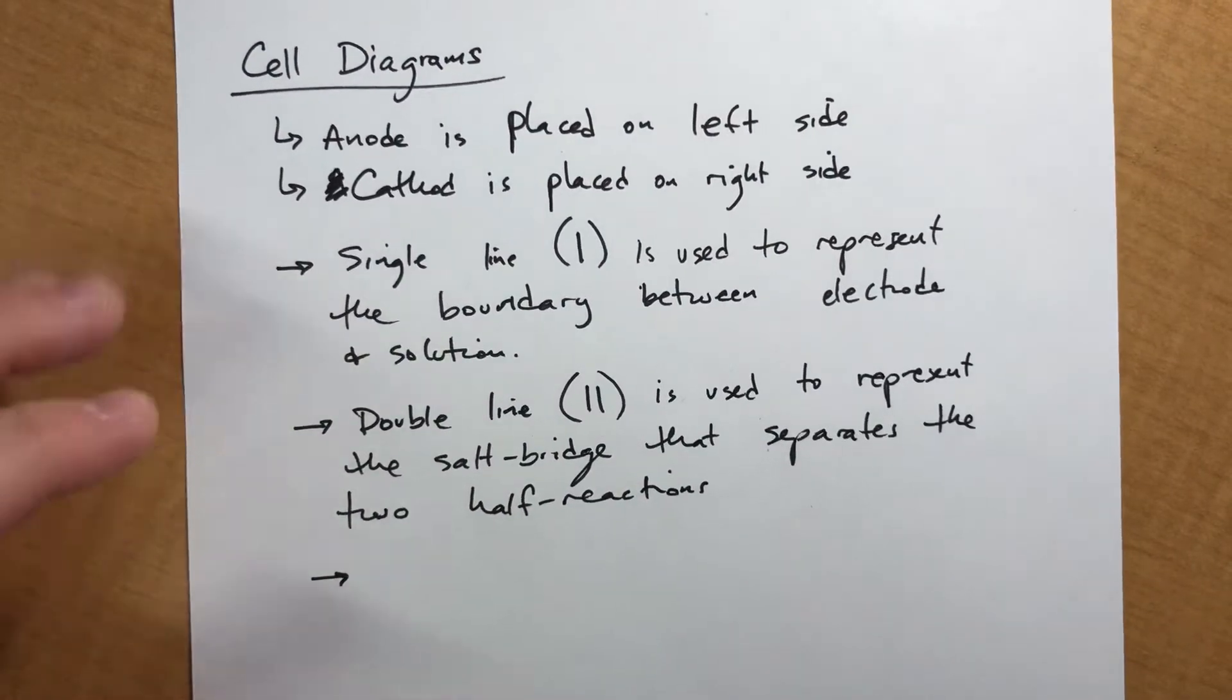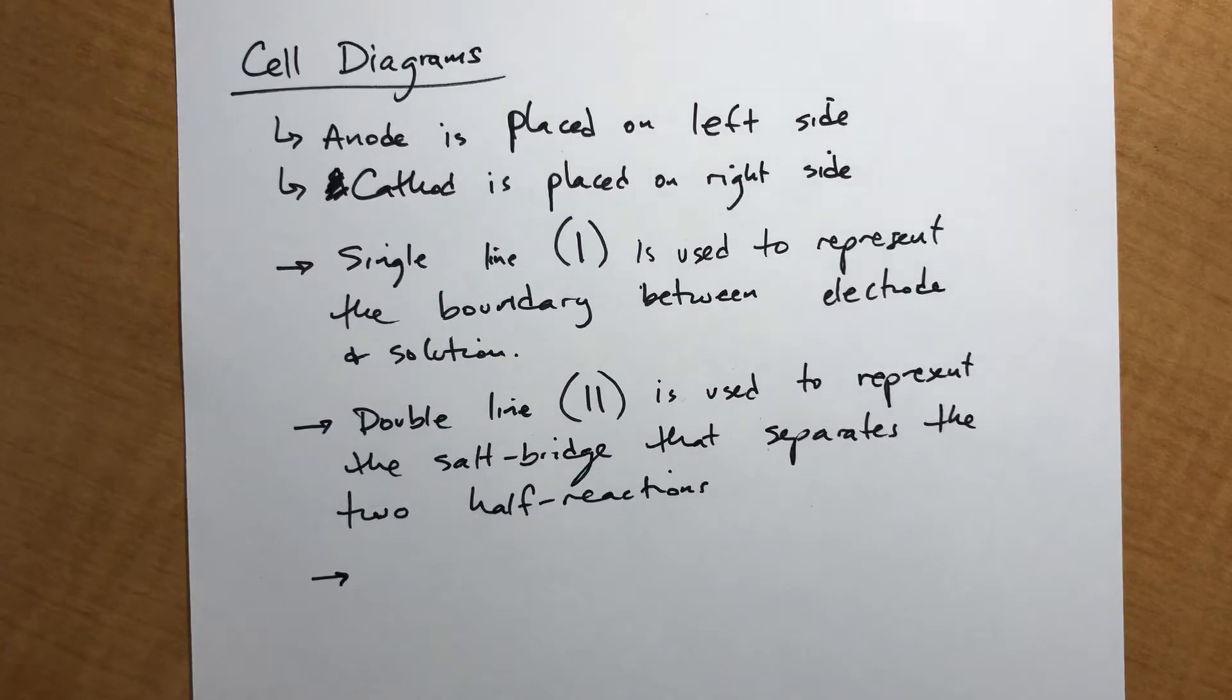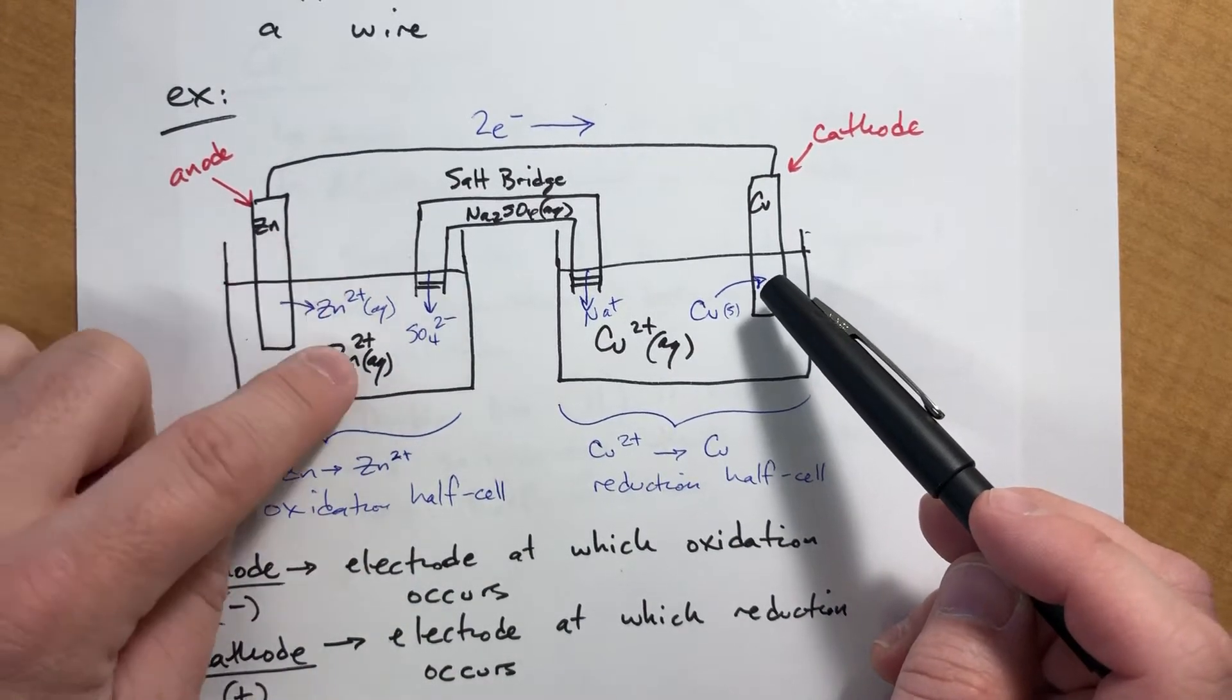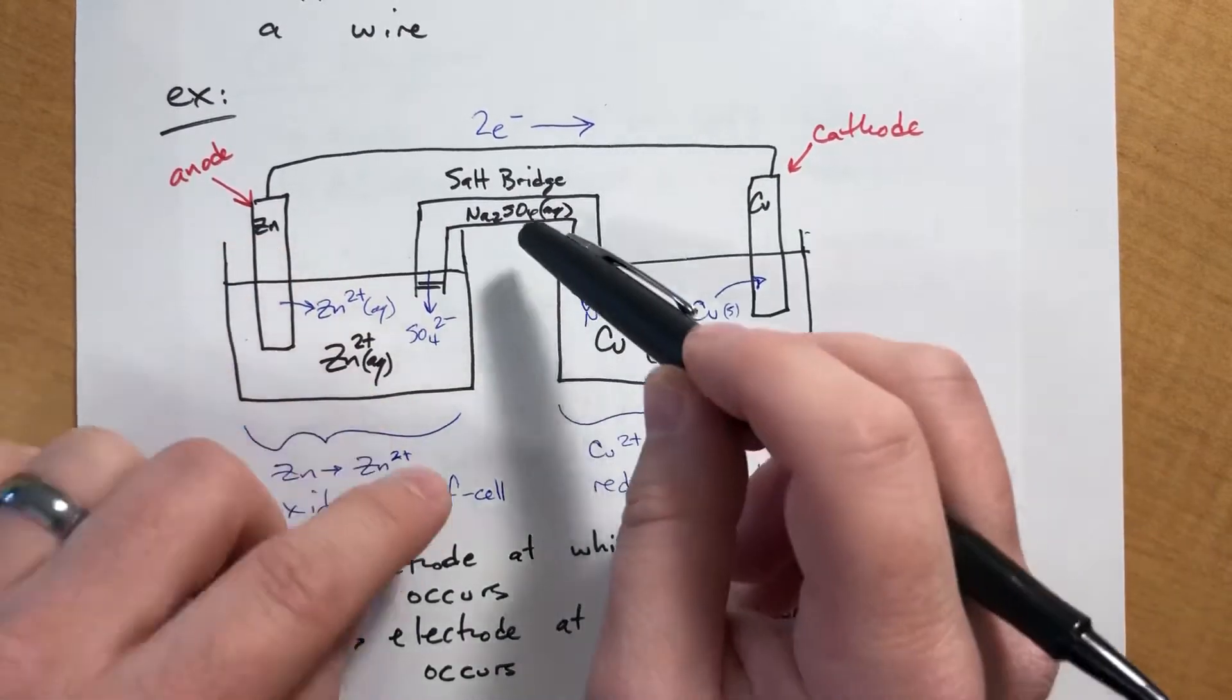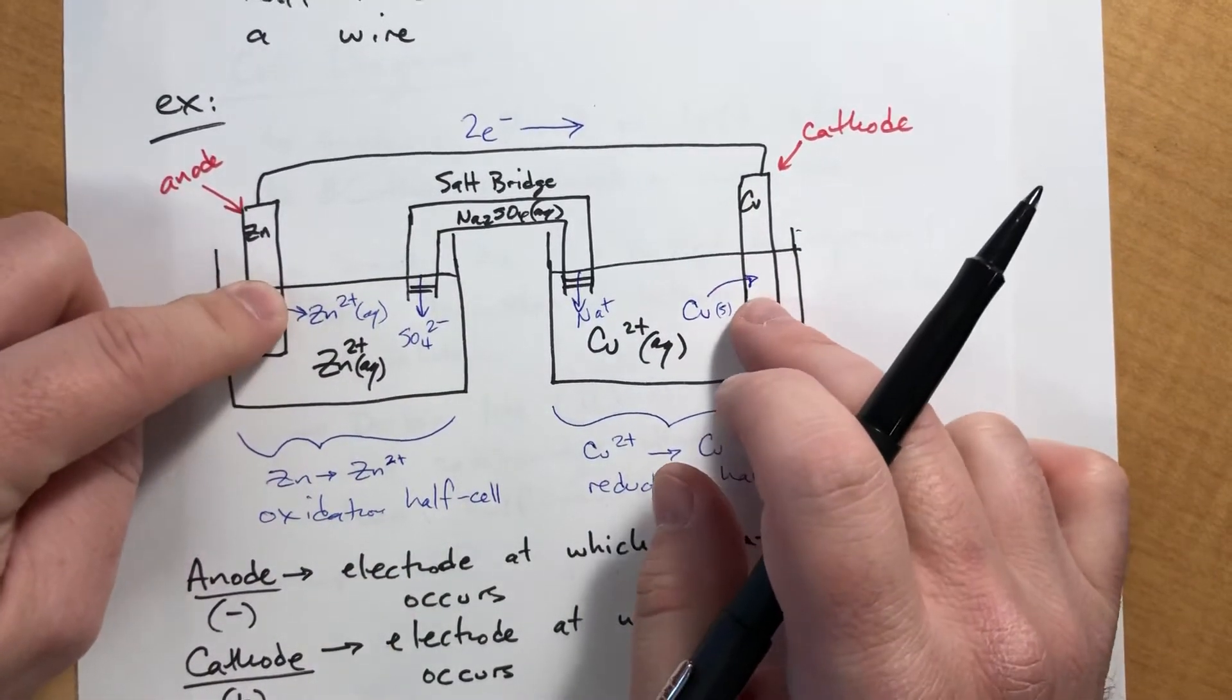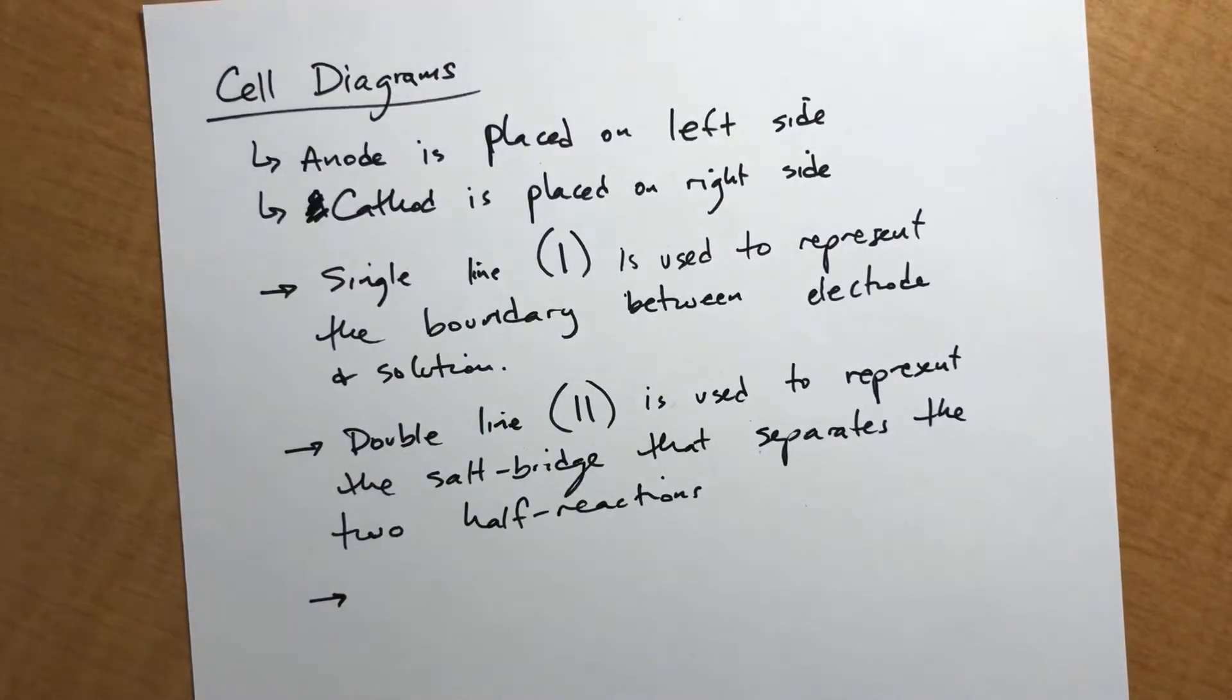And we always write it with the electrodes on the far edge of the diagram. I intentionally, in the last video, drew them like that. So what we're going to have is there will be a single line separating the zinc and the zinc 2+, and a copper and the copper 2+, and then the double line will separate this half reactant, this beaker from this beaker. The electrodes are always drawn off the edges. I intentionally drew it like that here.